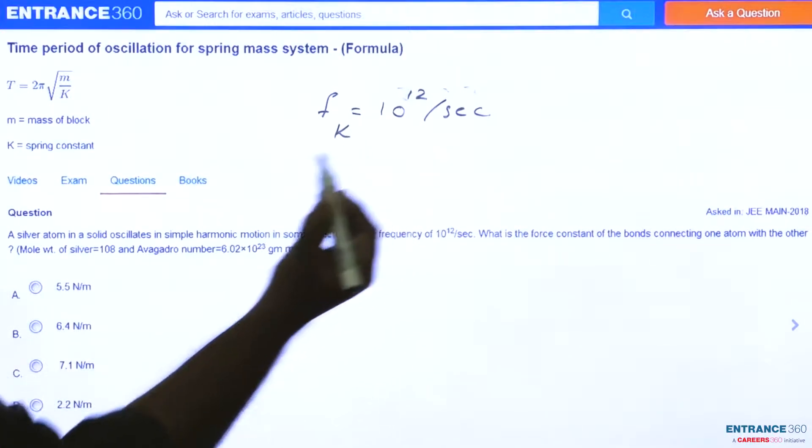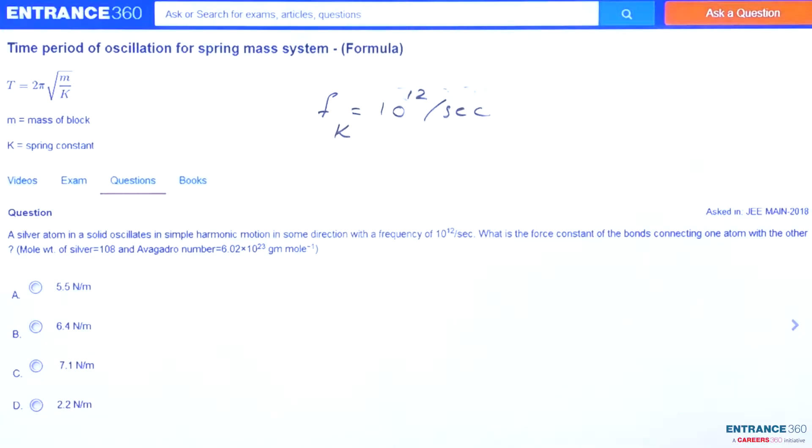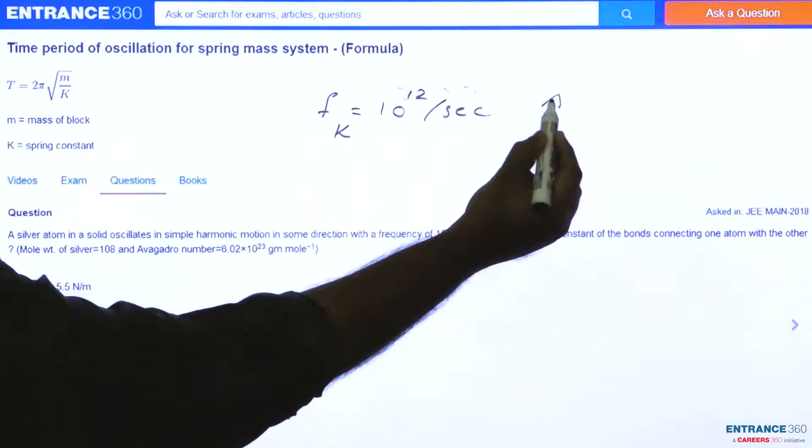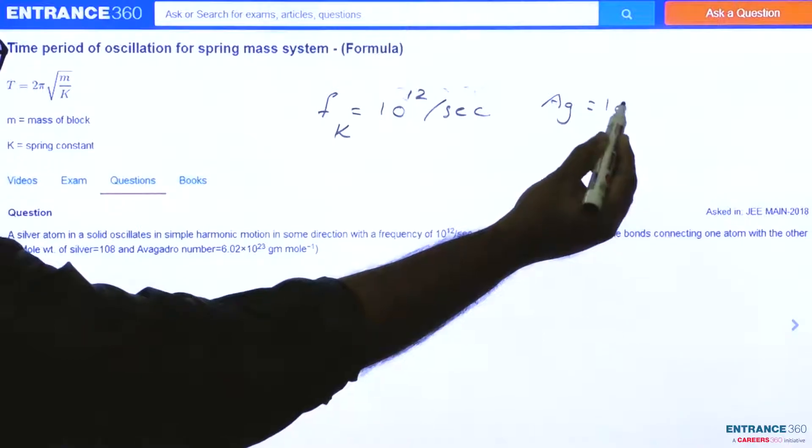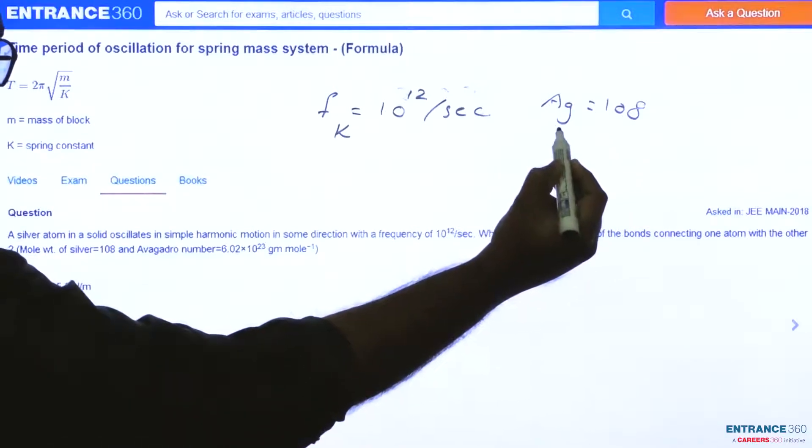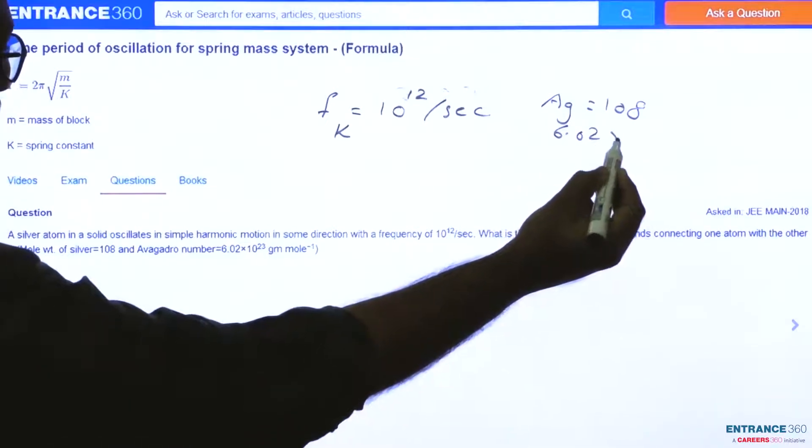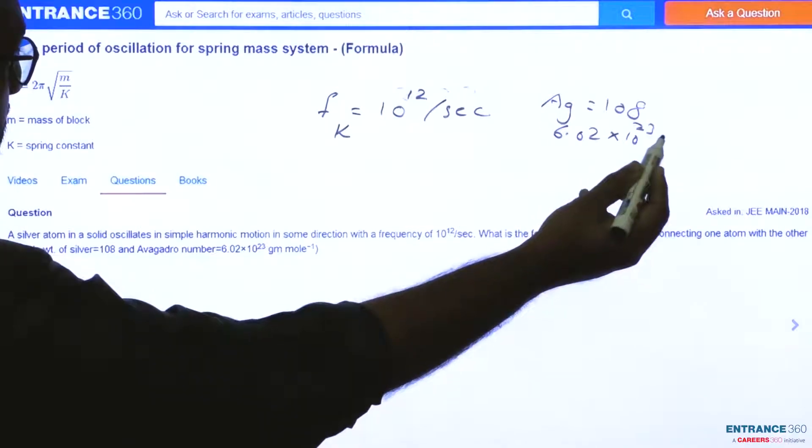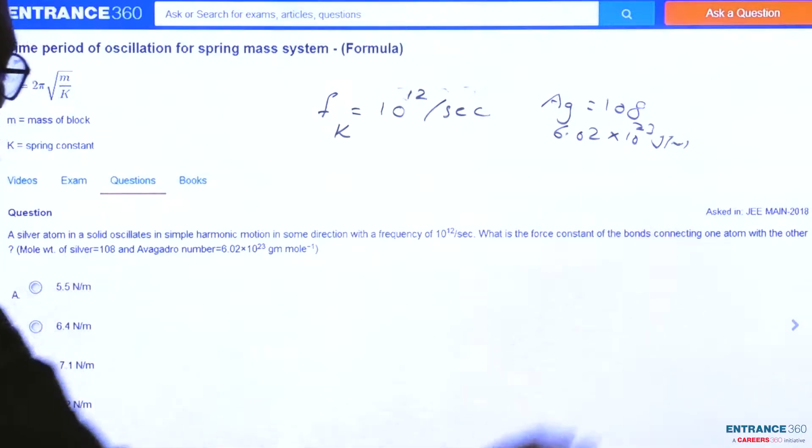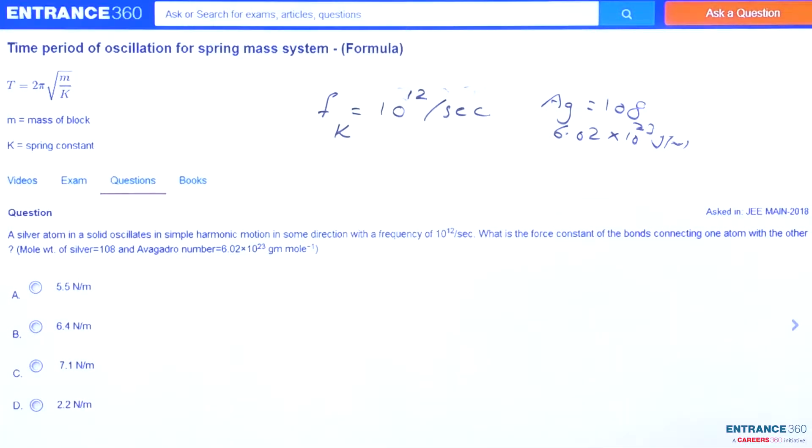You have to find the value of K. Given molecular weight of silver is 108 and Avogadro number also is given 6.02 into 10 raise to 23 gram per mole, so you have to calculate the value of K.